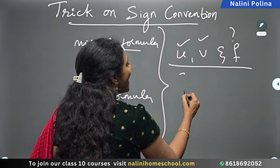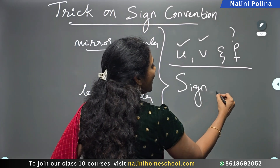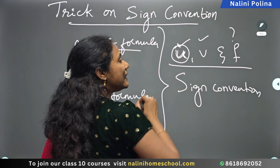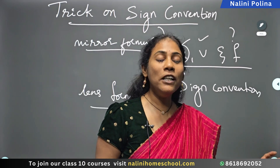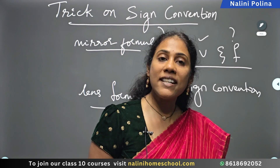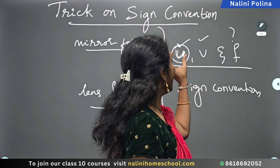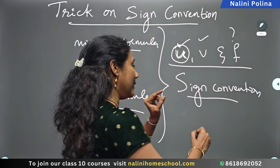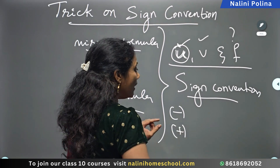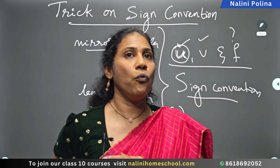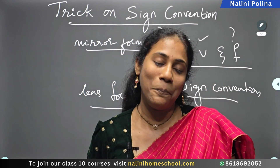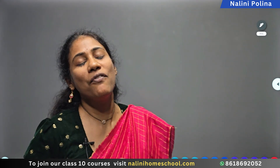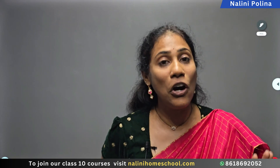The problem is with the sign convention. You have to take values along with a sign for the formula, whether it's convex or concave lenses, or convex or concave mirrors. Whenever you take values of u, v, and f, you must take them with a particular sign — minus or plus. What sign to use for which mirror and which lens is the biggest problem. So here I've come up with a beautiful tip and trick on sign convention.